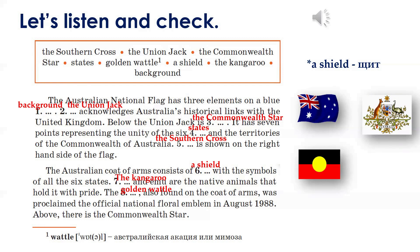So that is the reason why they are our official symbols? It's not really so. The matter is that Australia has never adopted any official faunal emblem. By popular tradition, however, the kangaroo and emu are widely accepted as such. What about a floral symbol? The golden wattle, also found on the coat of arms, was proclaimed the official national floral emblem in August 1988. Above, there is the Commonwealth Star. The national colours are green and gold. There is one more official flag in Australia — the Australian Aboriginal flag, which represents Indigenous Australians and is one of the official flags of the country.